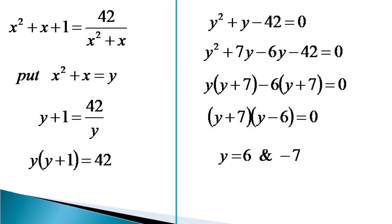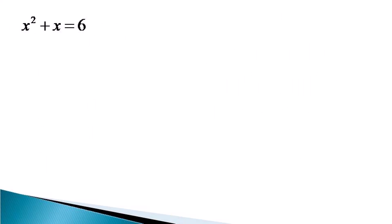Now we substitute back the value of y. It becomes x squared plus x is equal to 6, and the other value becomes x squared plus x is equal to minus 7. Let us consider x squared plus x equals 6 for the evaluation of the values of x.